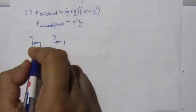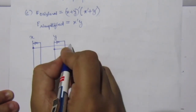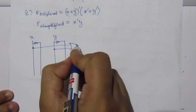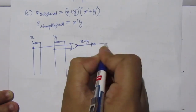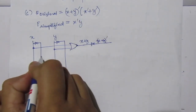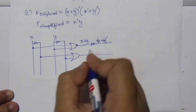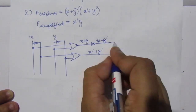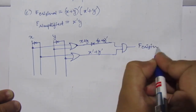For the term (X + Y)̅, first use an OR gate on X and Y to get X + Y, then use an inverter to get (X + Y)̅. For the term (X̅ + Ȳ), take the X̅ and Ȳ lines and use an OR gate to get X̅ + Ȳ. Then use an AND gate to multiply these two terms, giving F original.